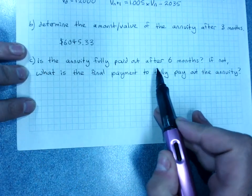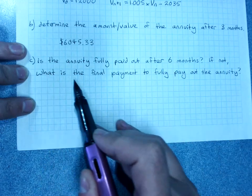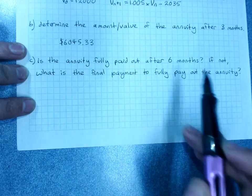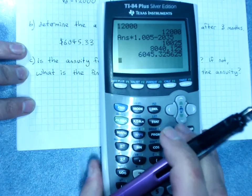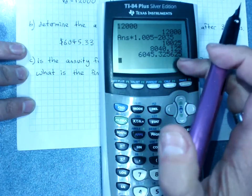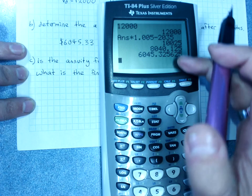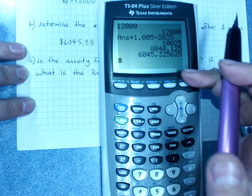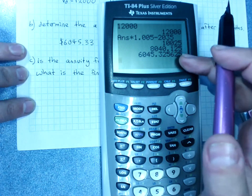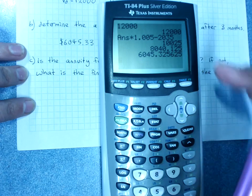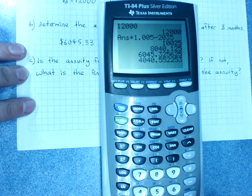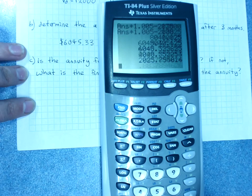Is the annuity fully paid out after six months? If not, what is the final payment to fully pay out the annuity? So as I said, they're normally paying it down. They're drawing down more than we earn in interest. So expect it to be fully gone pretty much by the end of the six months. I was up to three payments. So hit enter. Four months, five months, six months.